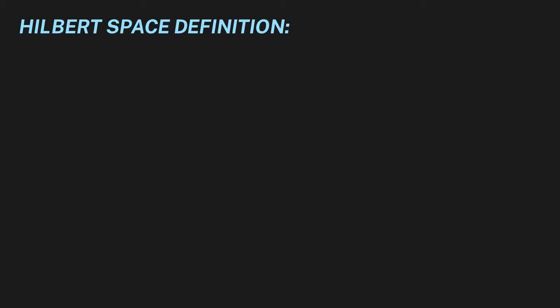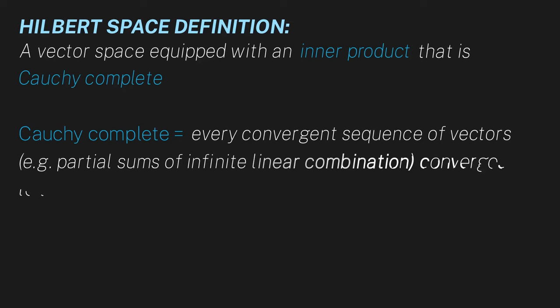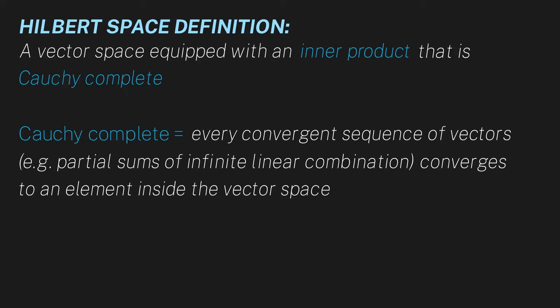A Hilbert space is defined as a vector space equipped with an inner product that is Cauchy complete. Let's break down the math talk. An inner product is essentially a generalized dot product, and we'll discuss this more next episode. Cauchy complete means that every convergent sequence of vectors, like the partial sums of an infinite linear combination, converges to an element inside the vector space.